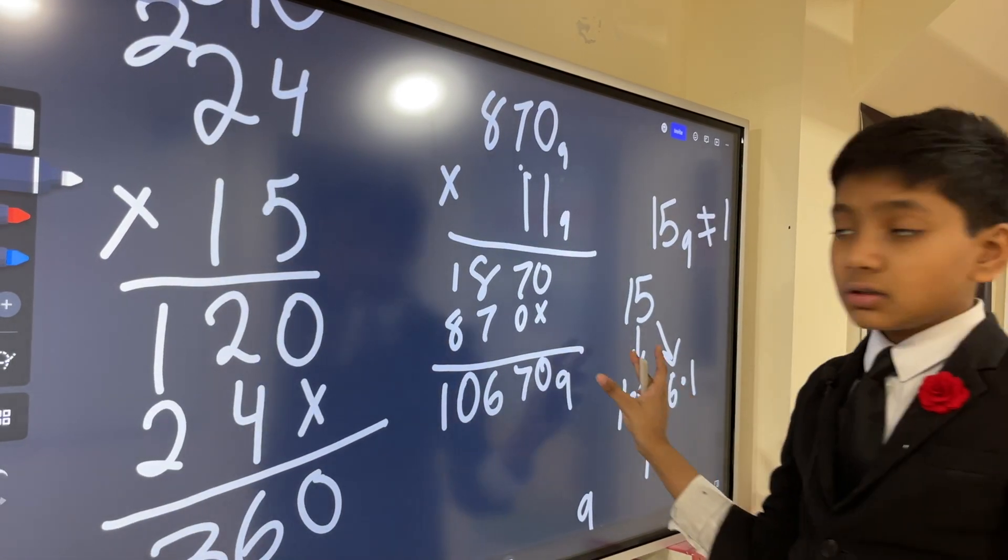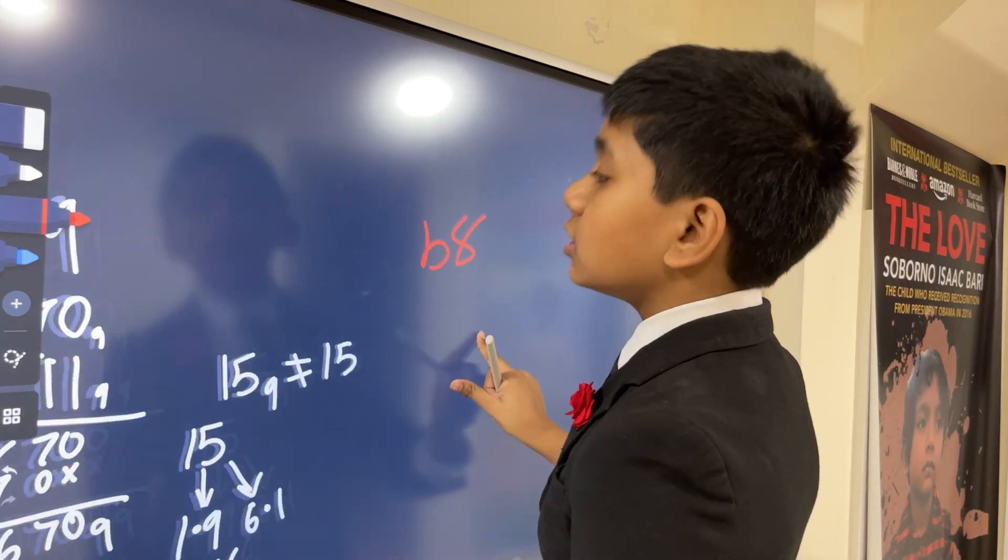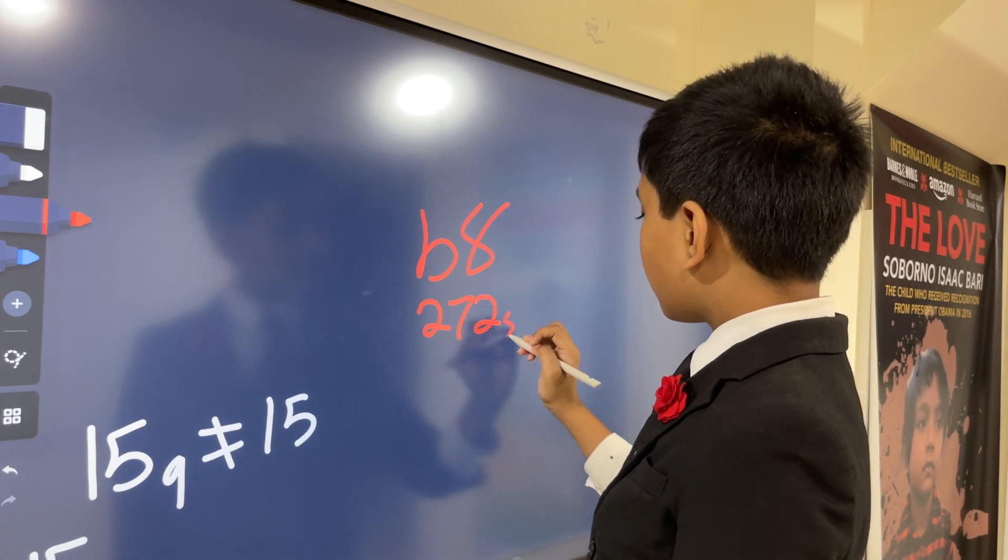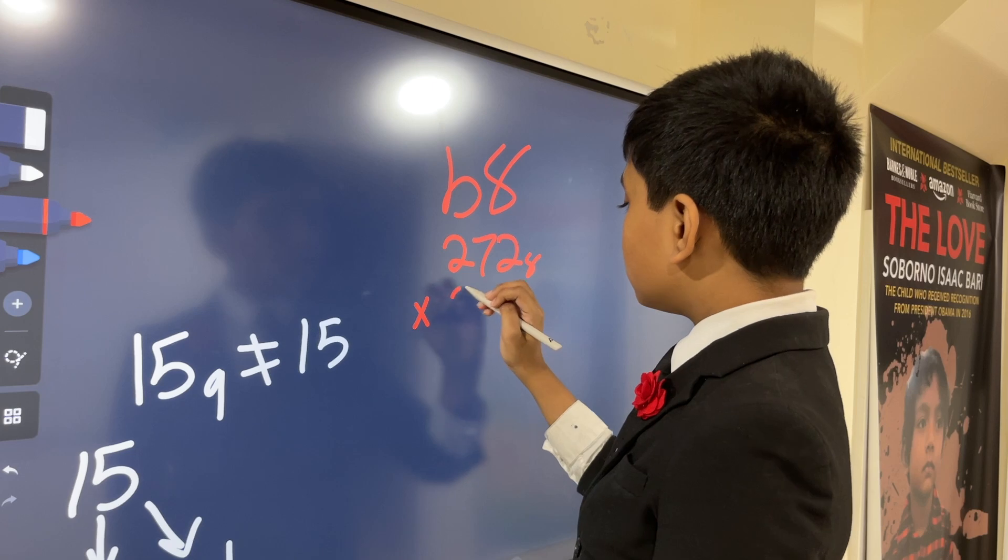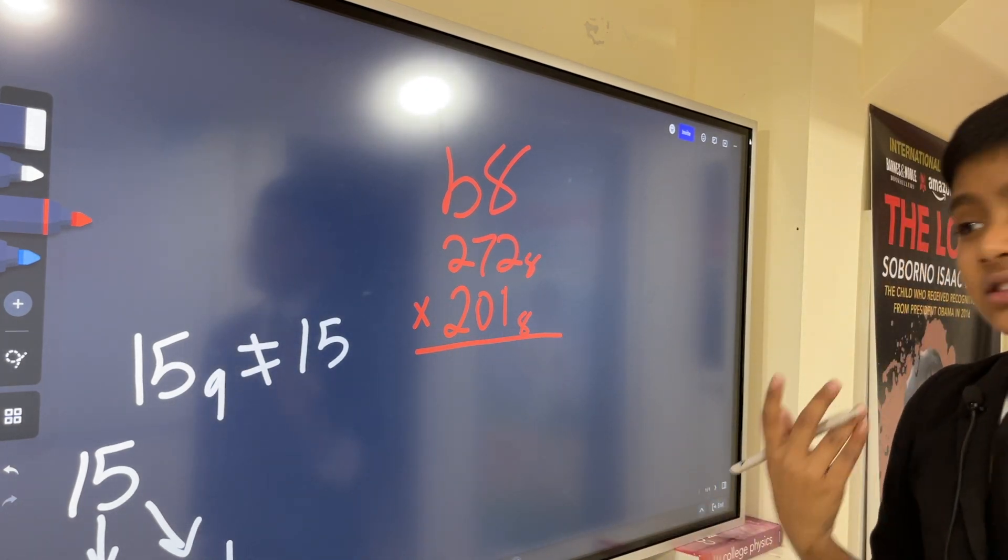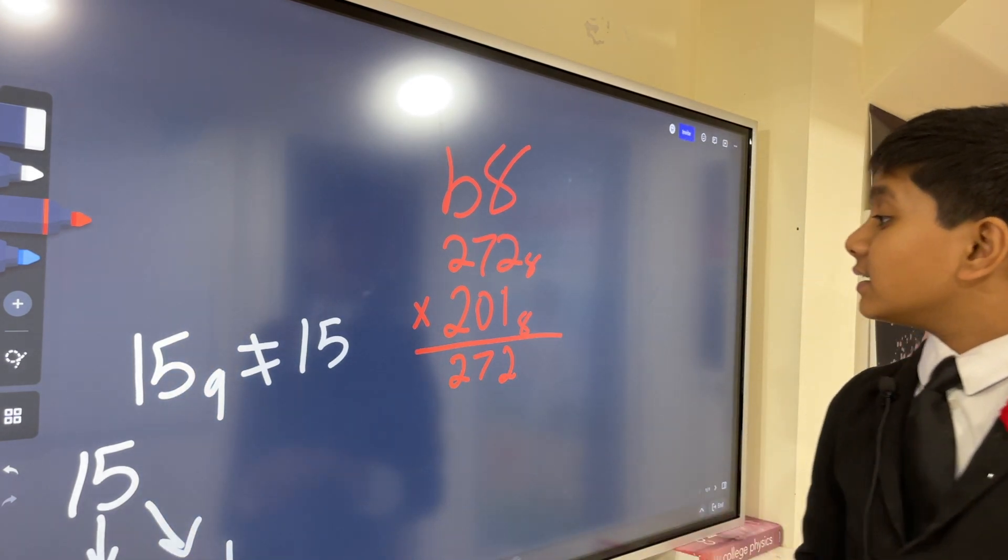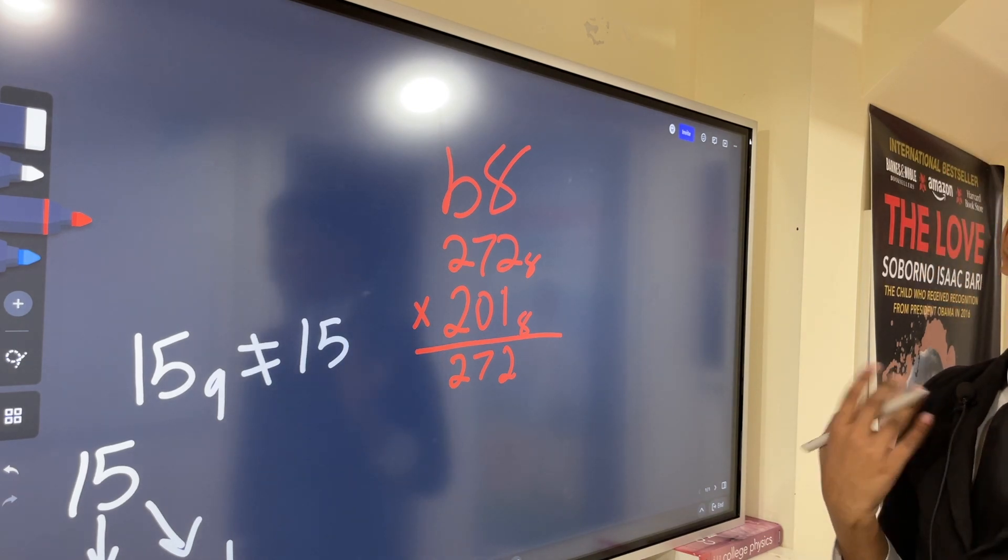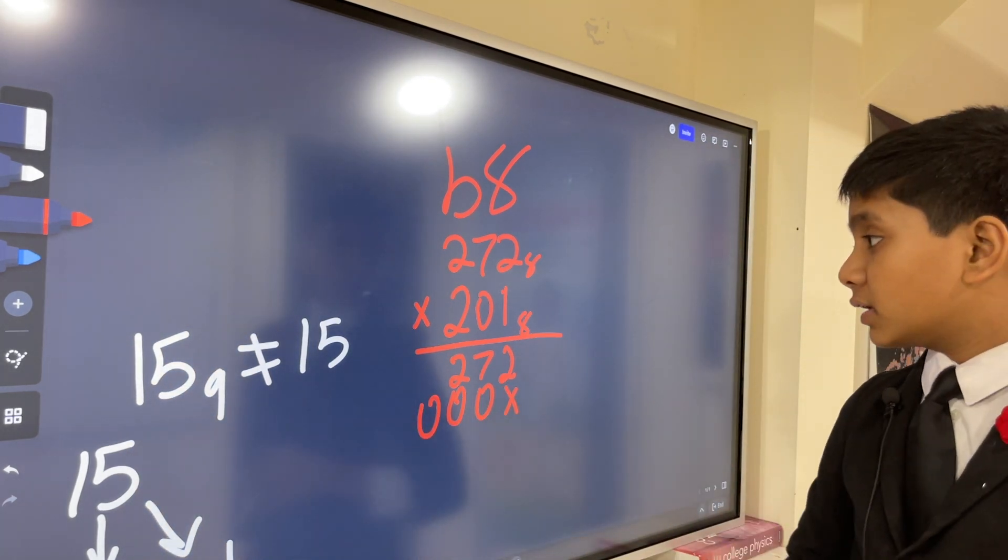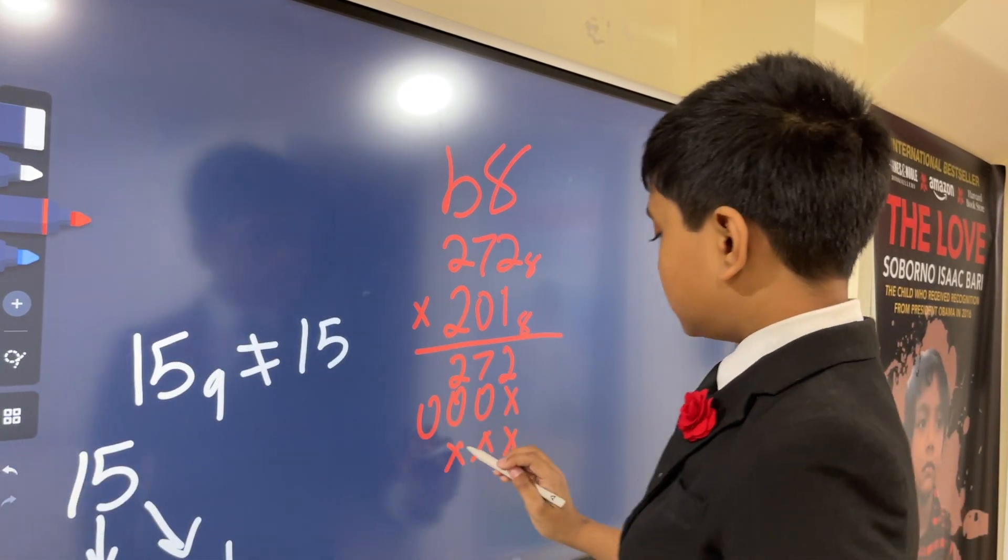For base 8, I'm going to show you another little trick. We're going to do 272 for the top and 201 for the bottom. Here we can already do the one trick with 272. Then we have a zero, which is really cool because it allows us to put 000 without actually having to think about it.